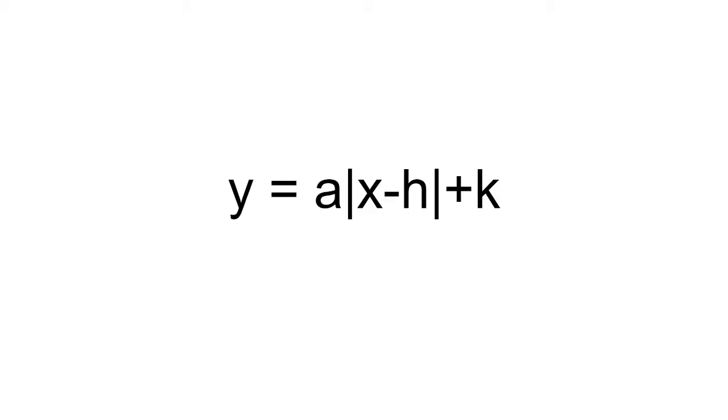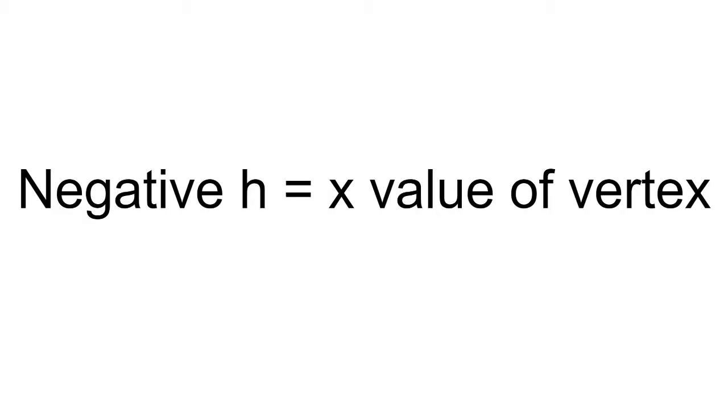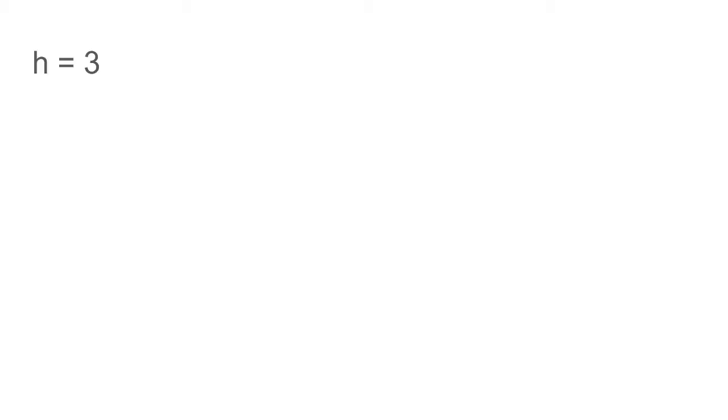And now we are going to be talking about the rules of h and k. So, negative h is equal to the x value of the vertex. For example, if h is equal to 3, then the x value of the vertex is also negative 3.